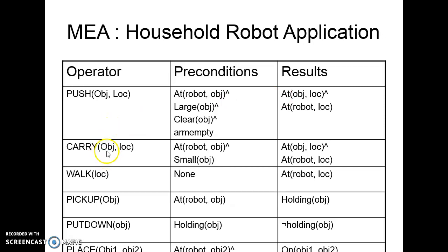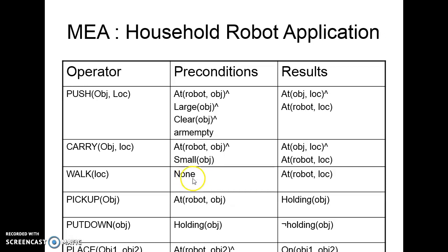Similarly, we have the carry operation, where the robot carries a small object to a specified location. The preconditions are that the robot must be near the object and the object must be small. So large objects like the table are pushed, while small objects like the apple and book are carried. The result is the object and the robot are both at the specified location. Then there is the walk operation, which takes a destination location with no preconditions — the robot can walk at any time, and the result is the robot reaches the desired location.